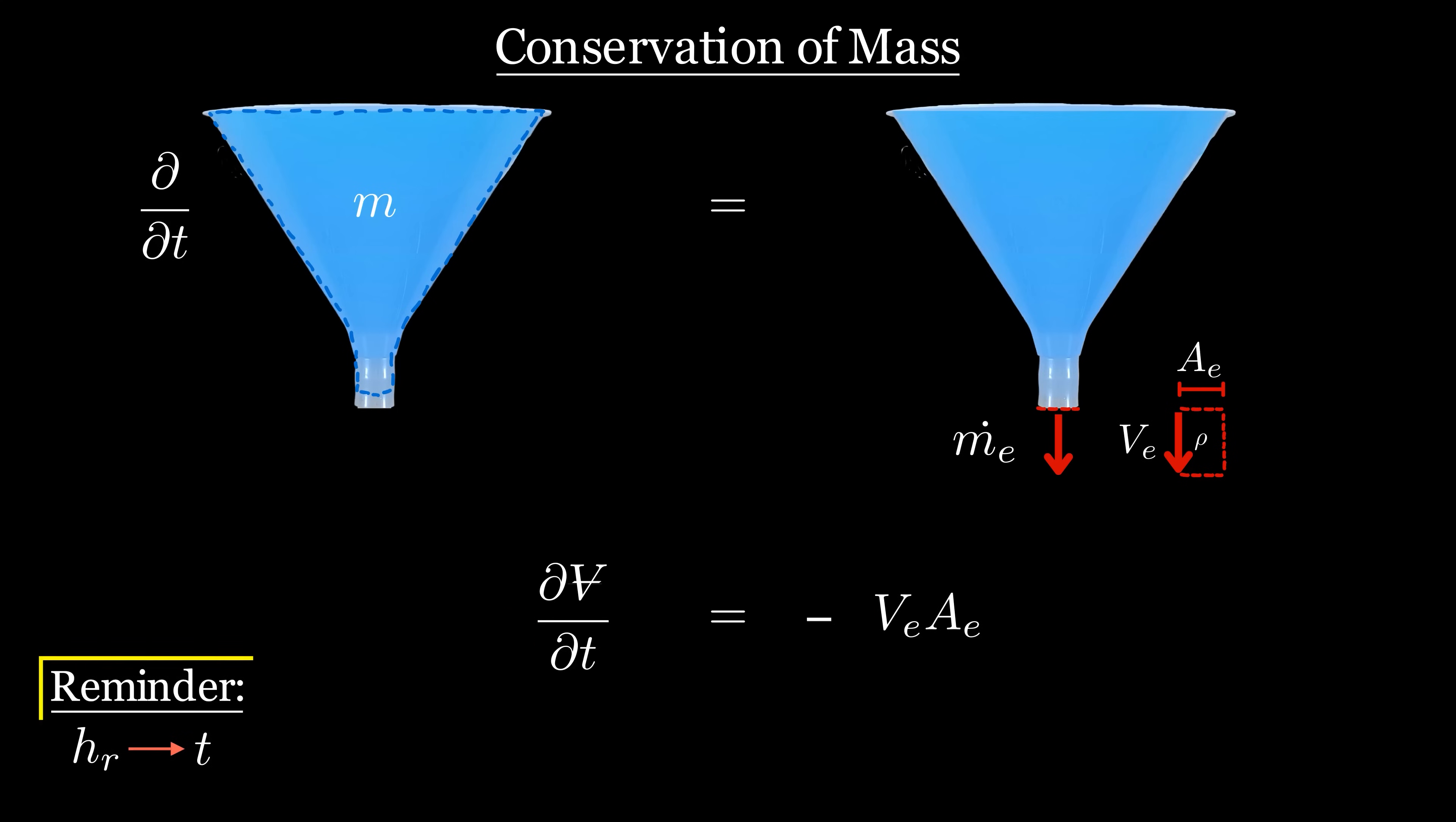After reminding ourselves that we want the reservoir height related to time, we can see that there are two variables left that we need to relate to height in order to solve this, since the outlet area is a constant and we do want time to be in the equation.